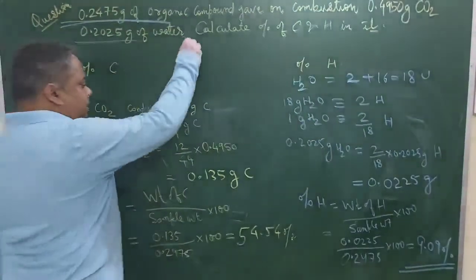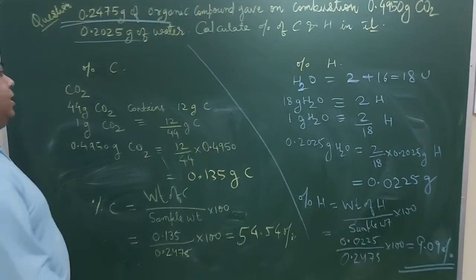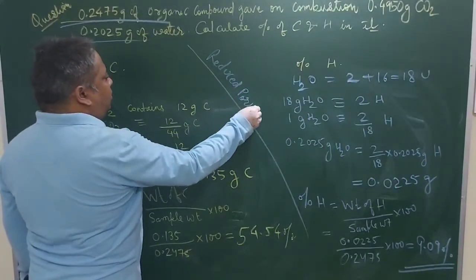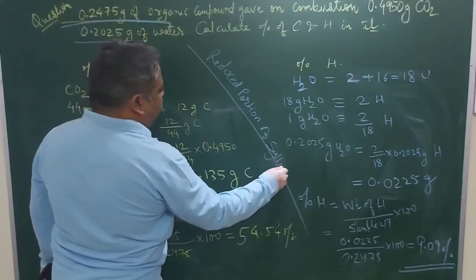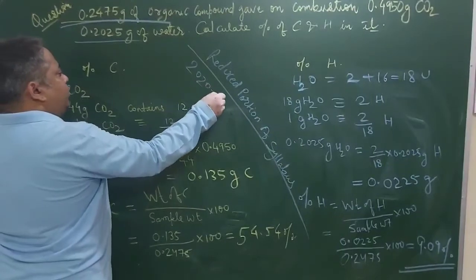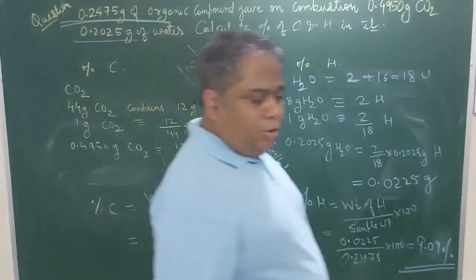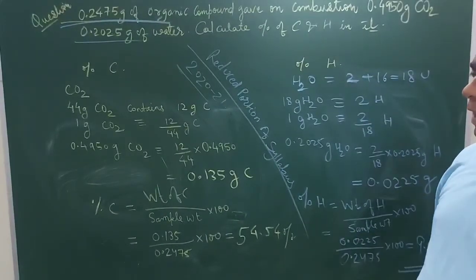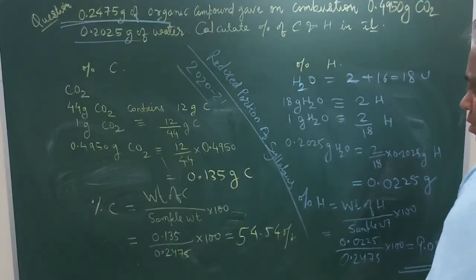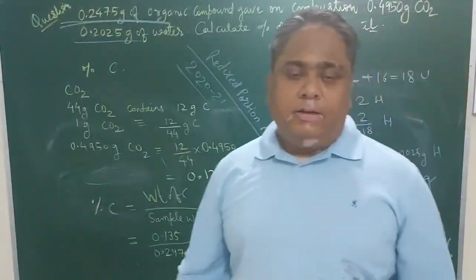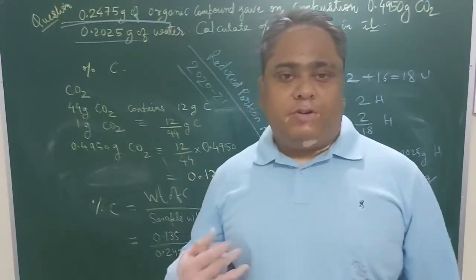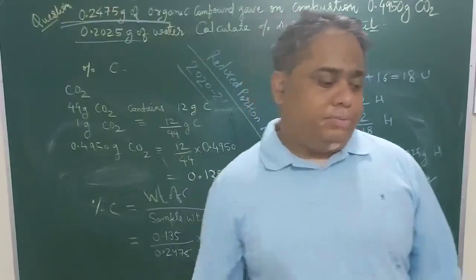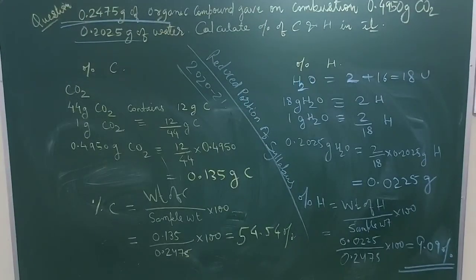This is the way numericals come from this chapter. Note that this is a reduced portion of the syllabus for 2020-21, but I have taught it anyway because it will help you in competitive examinations and the wholeness of the concept would be lacking if I skipped it. In my next class I will tell you about Carius method — estimation of halogens, phosphorus, and sulfur — and then we will go on to Dumas' method for nitrogen.